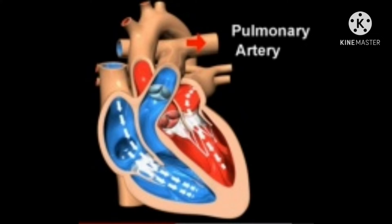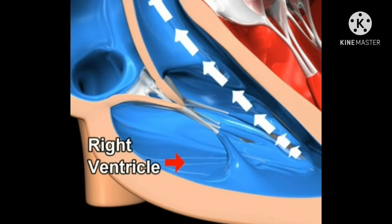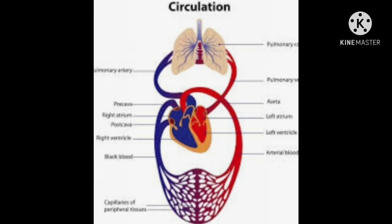The right ventricle is connected to the pulmonary artery. The right ventricle pumps deoxygenated blood into the pulmonary artery for taking it into the lungs.